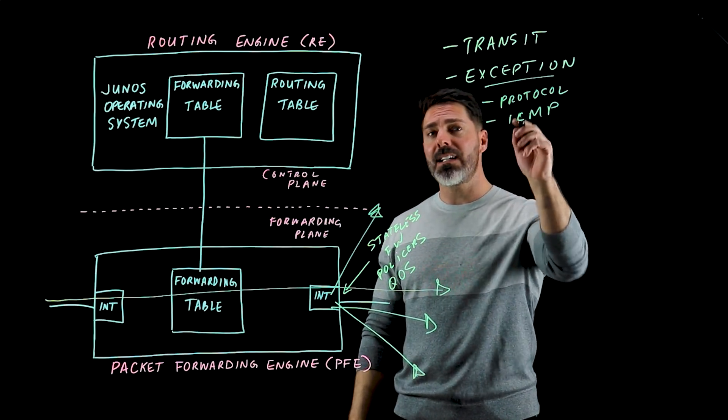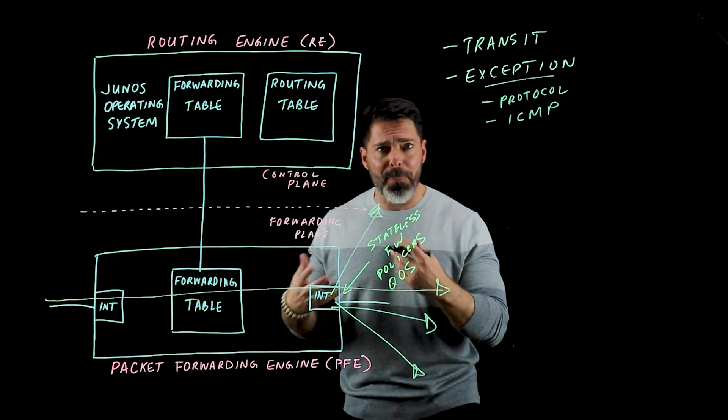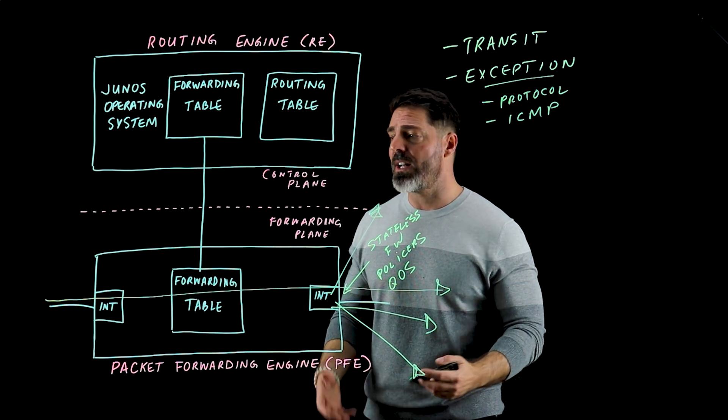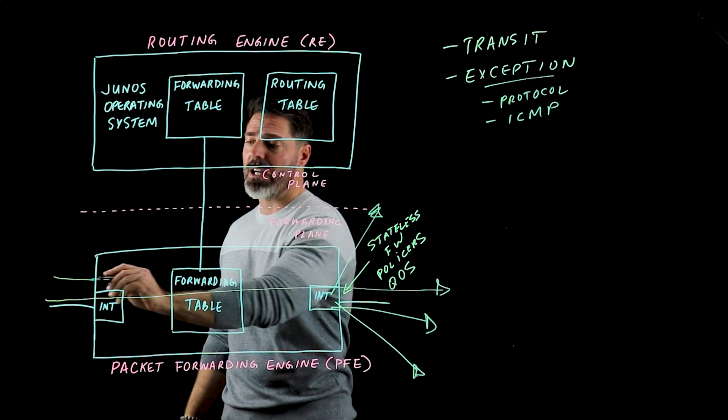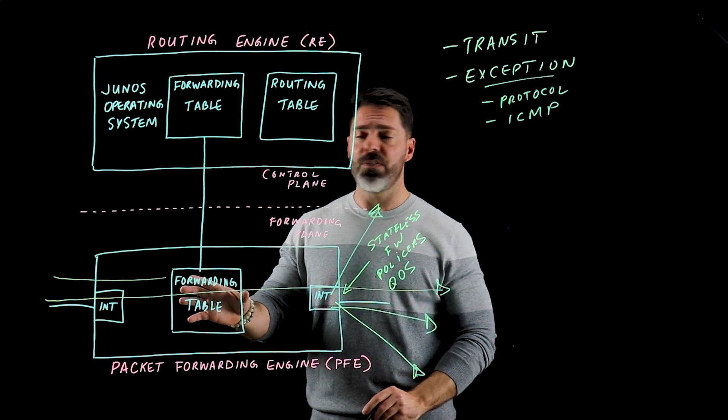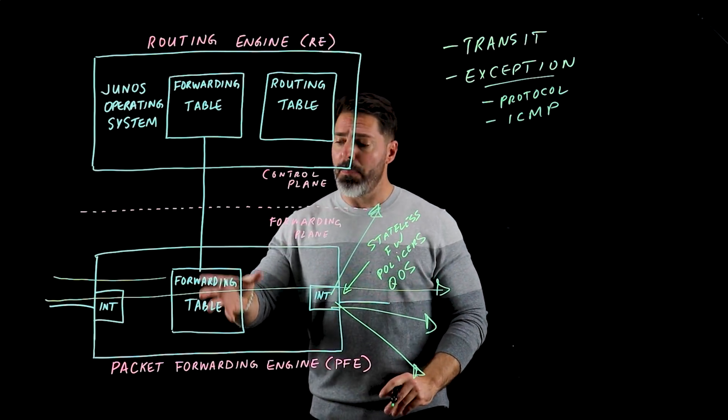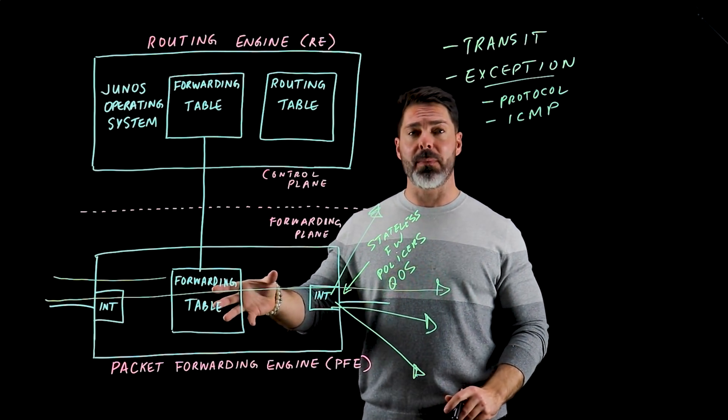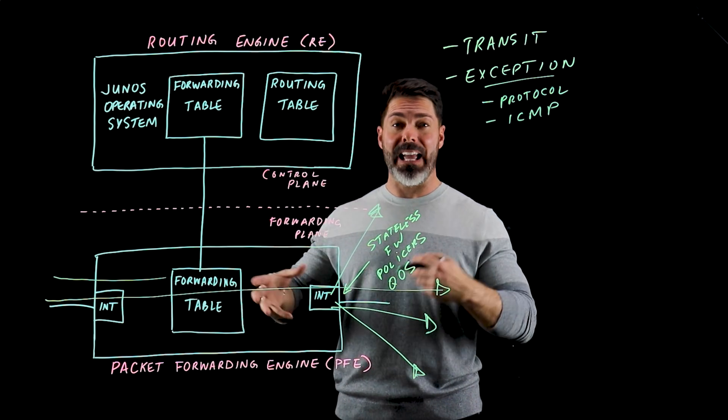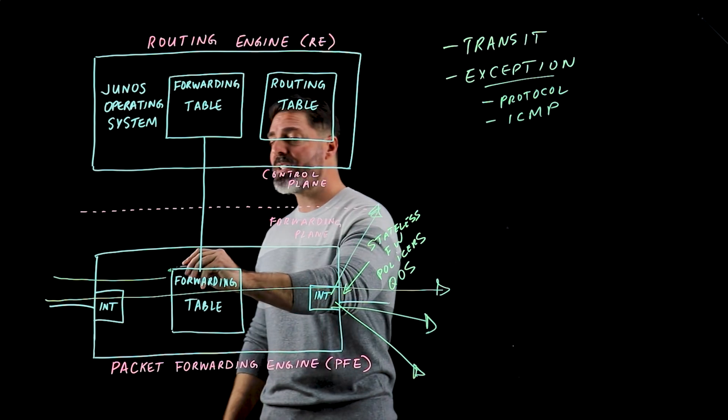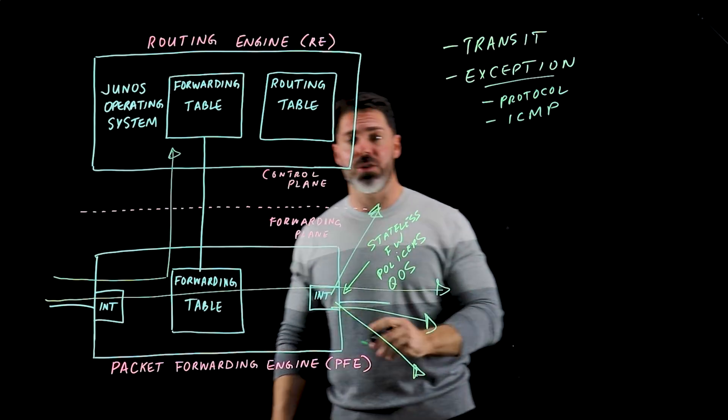When we see exception traffic, the packet forwarding engine is smart enough to see an exception packet coming in. It hits our local forwarding table and the packet forwarding engine is able to determine that that's traffic that needs to be handled locally, so it will send that traffic up to the routing engine.